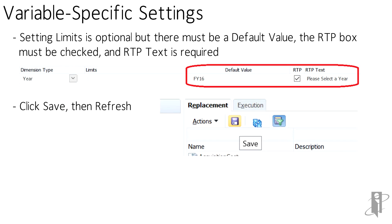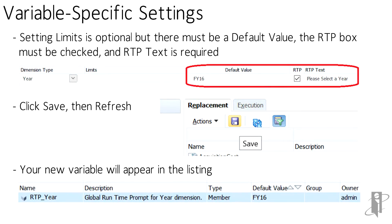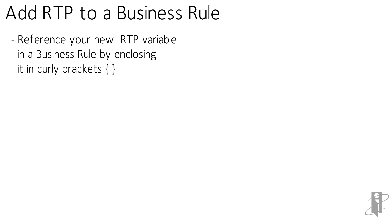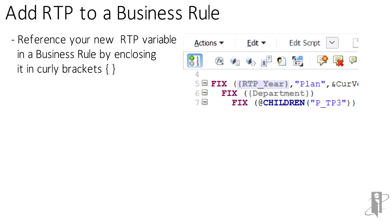The RTP text is the text that will be displayed to the user when the prompt appears. Once these values are entered, click Save, then refresh to see the new variable listed. To add the newly created runtime prompt variable to a business rule, reference the variable in the business rule, ensuring it's enclosed in curly brackets, and click Save.